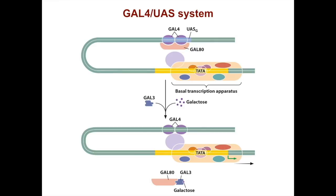The GAL4-UAS system is an interesting example from yeast of how transcription is activated in response to galactose. In the absence of galactose, GAL80 blocks GAL4, a transcription factor, from activating transcription. GAL4 binds to UAS sequences. When galactose is present, GAL3 is activated, and GAL3 brings about a change in the conformation of GAL80. This allows GAL4 to now interact with the basal transcription apparatus and stimulate the transcription of genes needed for galactose metabolism.